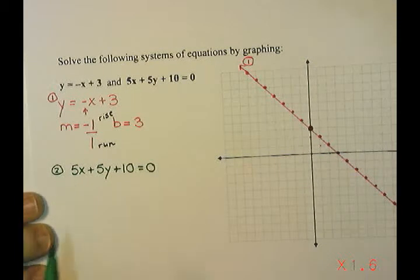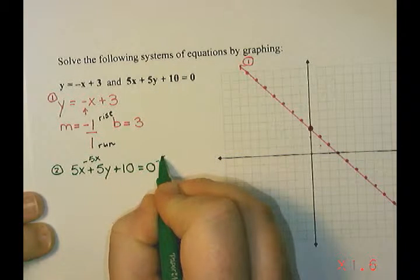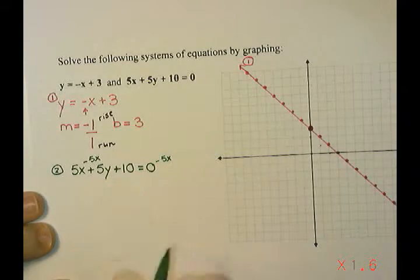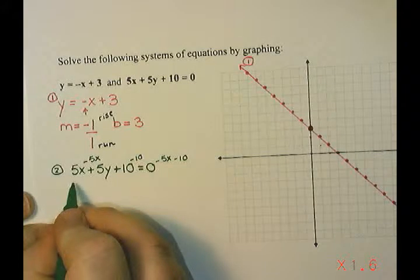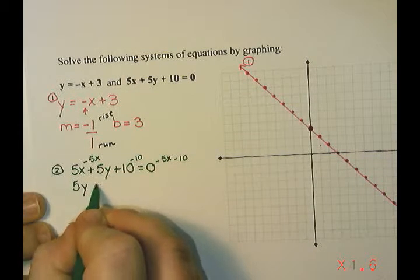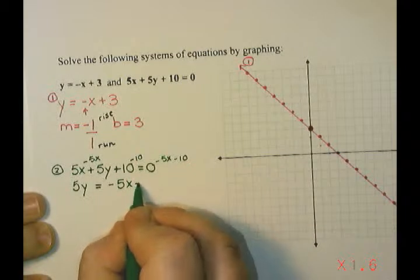So I'm going to start by taking the 5x to the other side by subtracting. And I'm also going to take that 10 to the other side by doing the opposite and subtracting. So I get 5y equals negative 5x, take away 10.